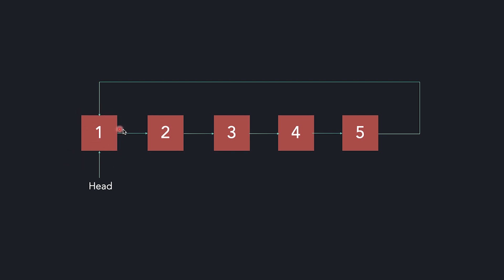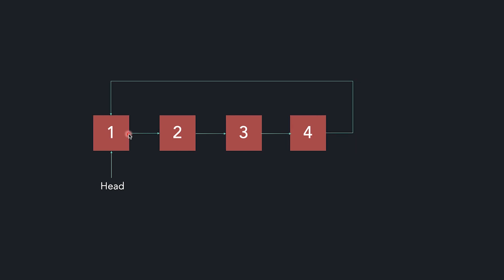So why do we call it circular? Because from the last node we are getting back to the first node, forming a circle. Now let's see how we do the implementation.